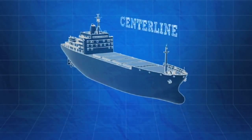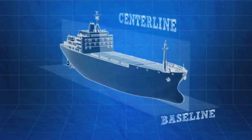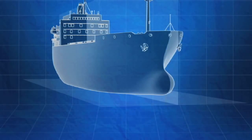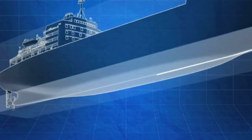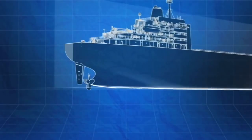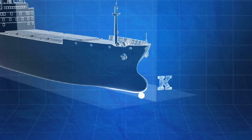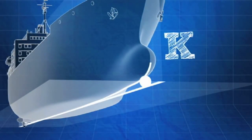The centerline is a vertical plane that runs the length of the ship at the midpoint of its beam, and the baseline is a horizontal plane perpendicular to the centerline, located at the lowest point of the hull. The keel is the principal structural member of a ship, running lengthwise along the centerline from bow to stern, to which the ship's frames are attached. The lowest point of the keel, or K, is the point from which vertical distances are measured on a ship. K is located at the intersection of the centerline and the baseline.